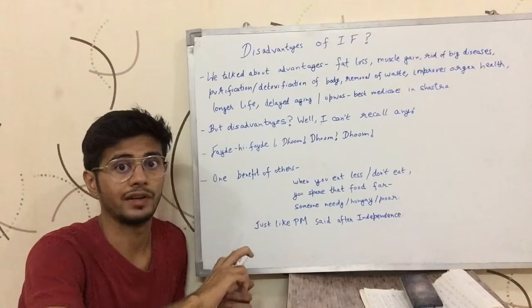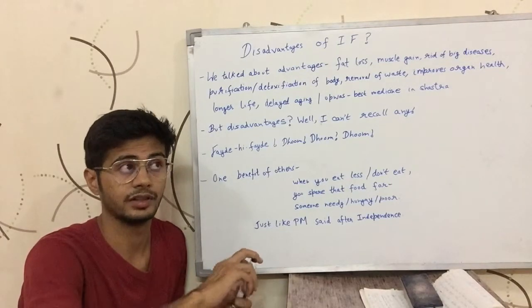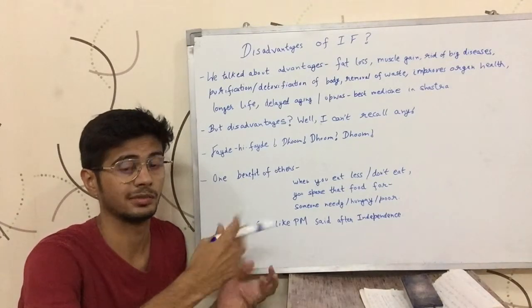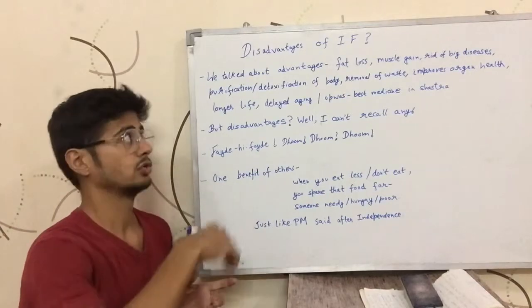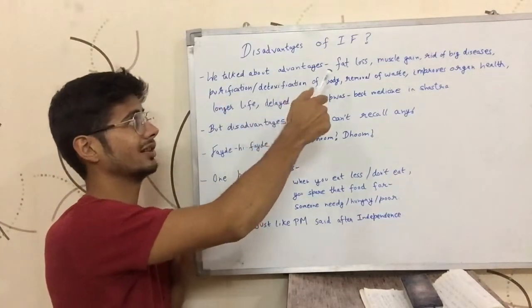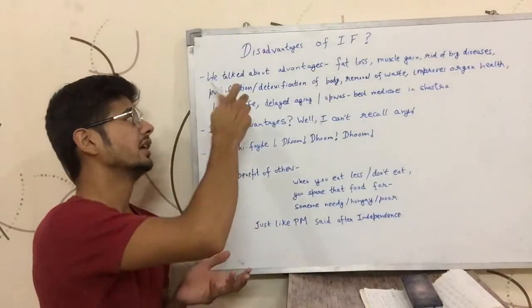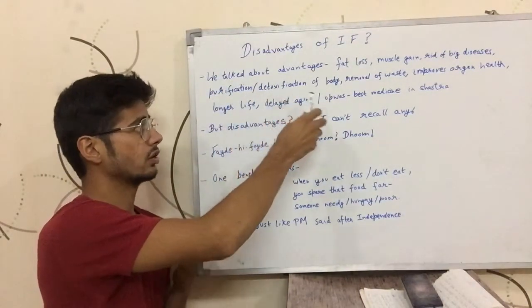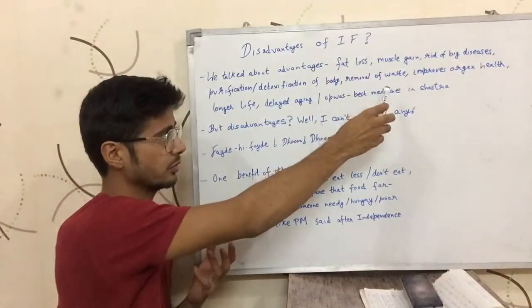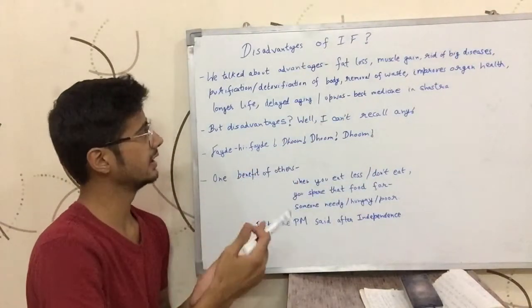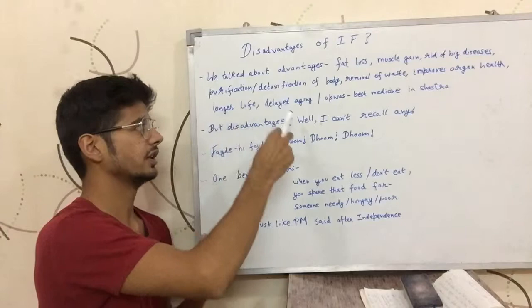So till now we have discussed a lot of advantages of intermittent fasting. Now we should discuss disadvantages also. Till now we have talked about advantages of fat loss, muscle gain, it can get you rid of really big diseases, it does purification of your body, detoxification, removal of waste from your body, improves your organs health, it gives you longer life, delayed aging.